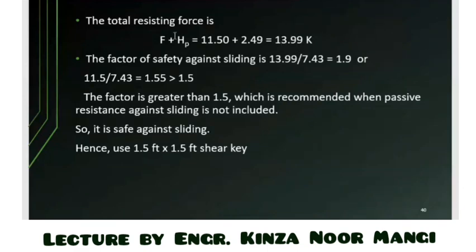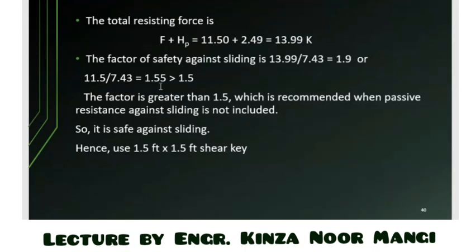The total resisting force = friction resistance + passive pressure = 11.5 kips. The force causing sliding = 7.43 kips. Factor of safety against sliding = 11.5 / 7.43 = 1.55 > 1.5, which is adequate. Therefore, a shear key of 1.5 feet depth and 1.5 feet width is sufficient to provide safety against sliding.